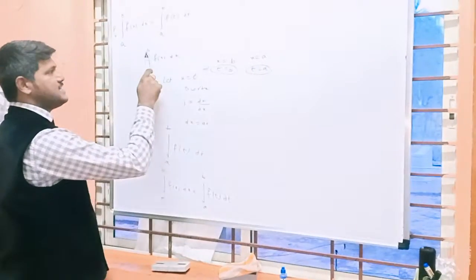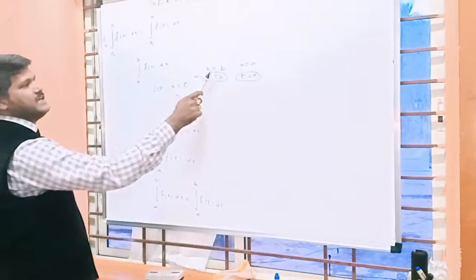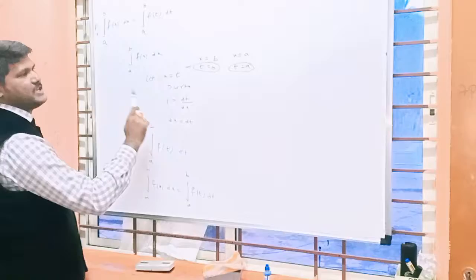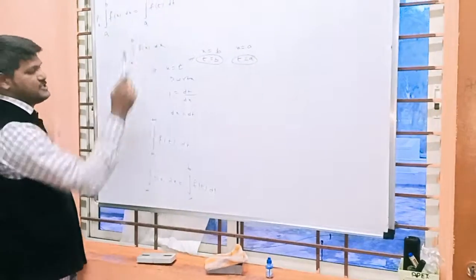Whenever you are changing x to t, the limit also you can change. Upper limit b, then t is b, because x equals t. Lower limit a, then t is also a. A to b f(t)dt. That is LHS.